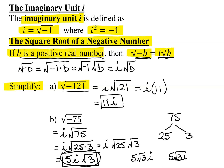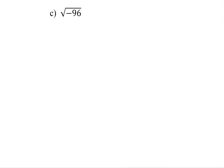So let's look at one last example: the square root of negative 96. Remember, the first thing is we're going to write it in the i format, because we have the square root of a negative number. The square root of negative 1 is i — pull that out — and we get i times the square root of 96.